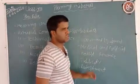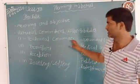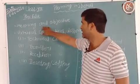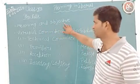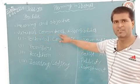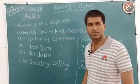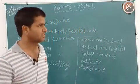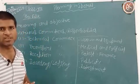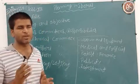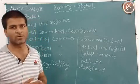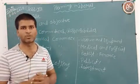About six topics will be discussed in this chapter. First topic: meaning and objectives of planning. Second topic: various committees and responsibilities. Third topic: tournaments. Fourth topic: fixtures. Fifth topic: intramural and extramural. Sixth topic: specific sports programs.